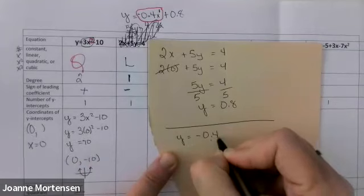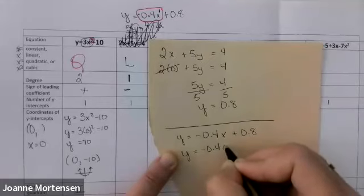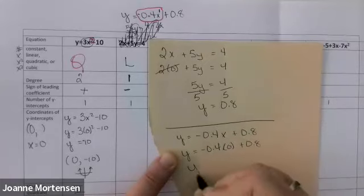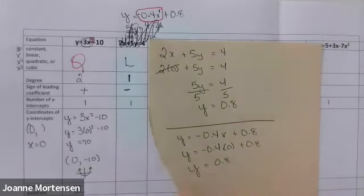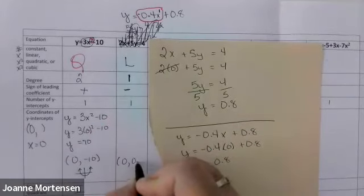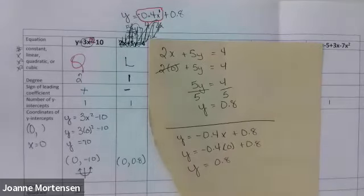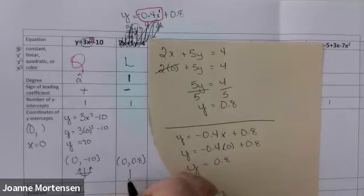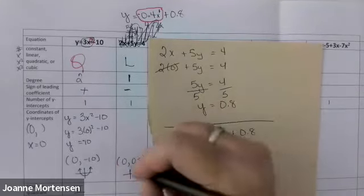Using the rearranged equation: y equals negative 0.4 times 0 plus 0.8, giving y equals 0.8. Either way I get 0.8. So the coordinates are (0, 0.8). Now if I were to draw a sketch: the leading coefficient is negative, so it's a straight line going downhill.